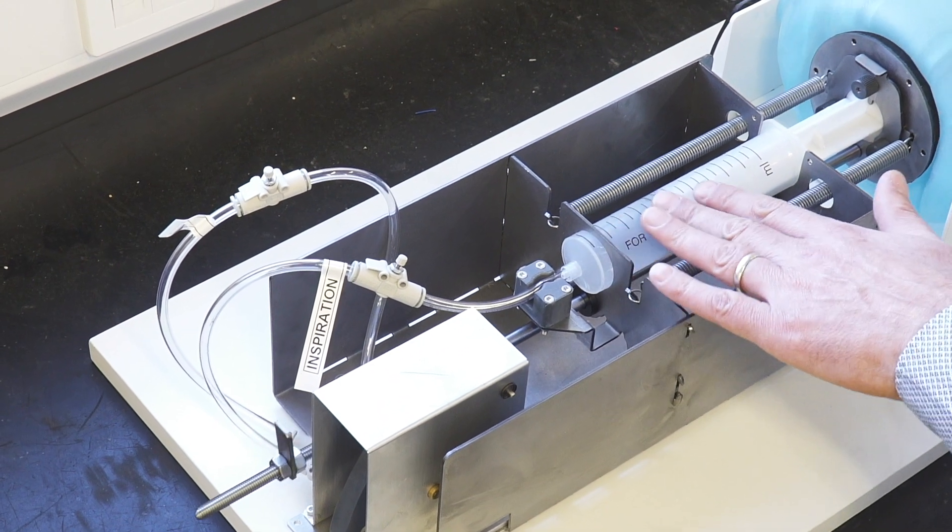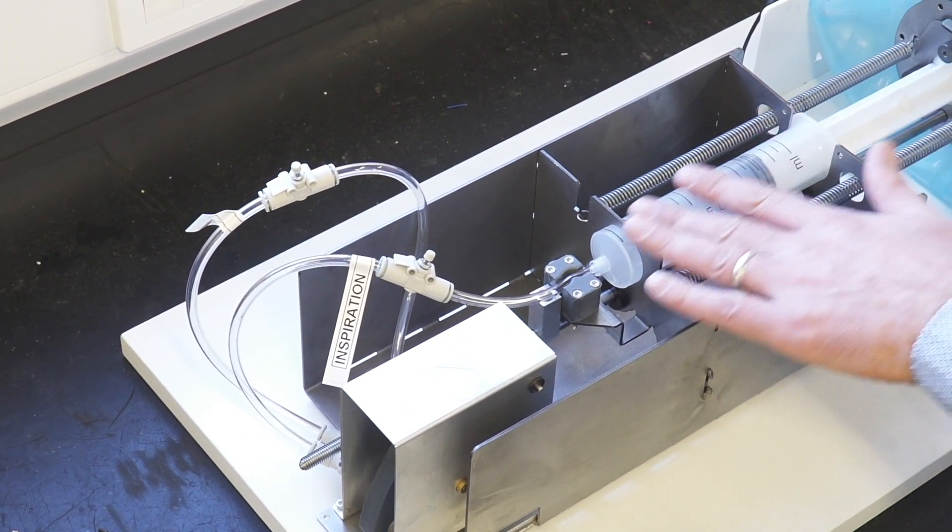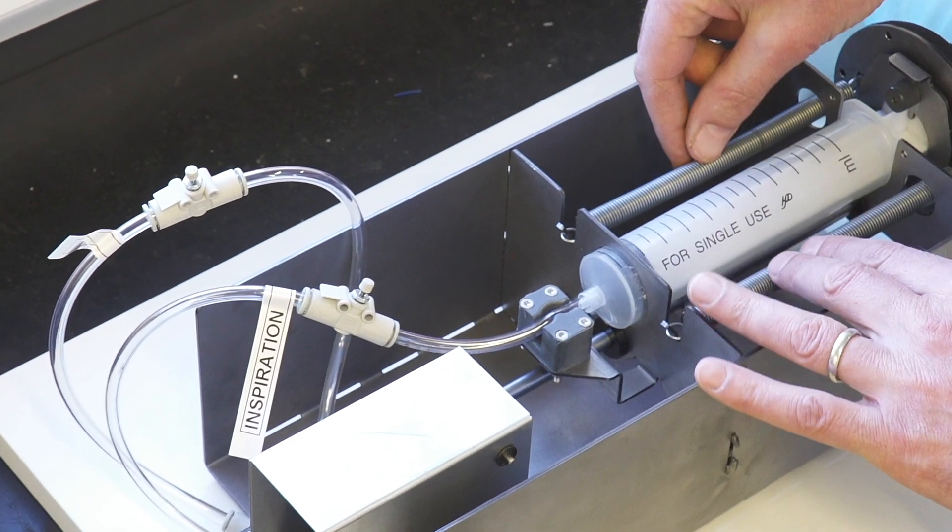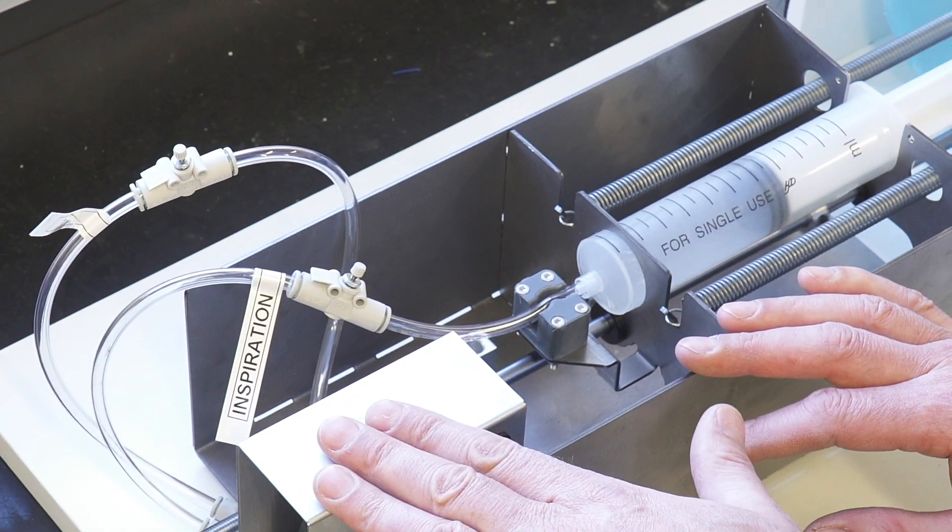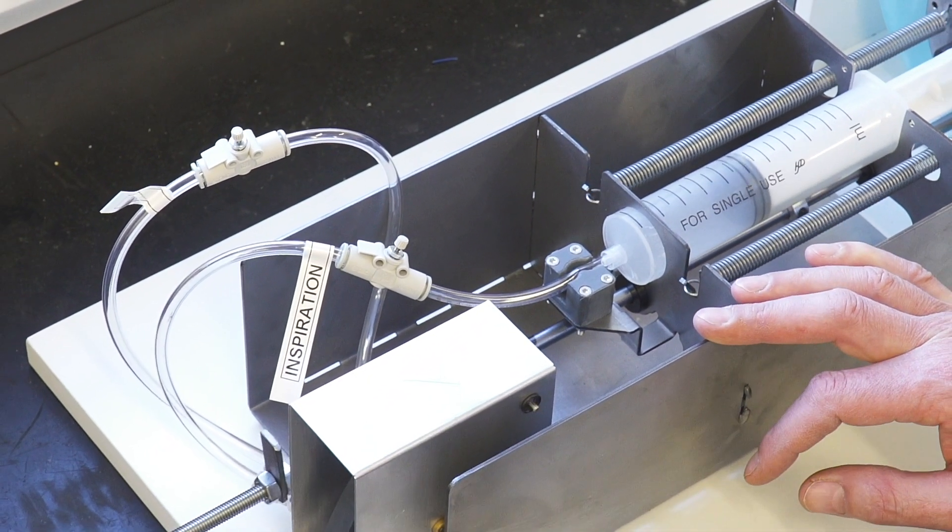We're using a repurposed 100 millilitre syringe as a pneumatic ramp which is mounted in a frame with some springs, and here we've got a little valve block and a sprung throw over.